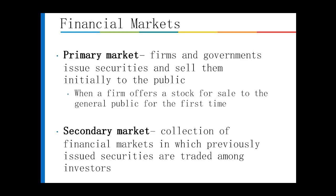Talking about the financial markets, they broke it up into two pieces: primary and secondary. Primary markets are where governments and firms issue securities and initially sell them to the public — an IPO is one type of primary market. The secondary market is a collection of markets in which previously issued securities are traded among investors. Generally, if you're going to go out to the marketplace and purchase securities, you're going to be dealing with the secondary market.